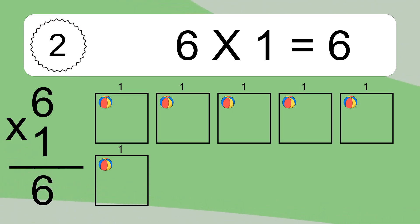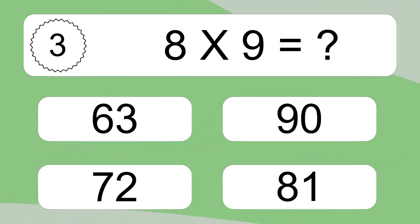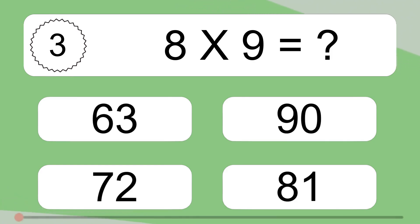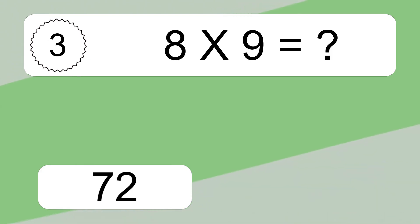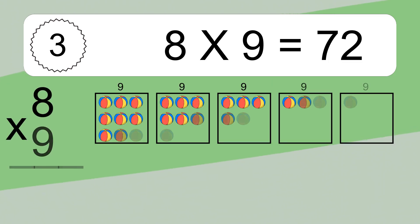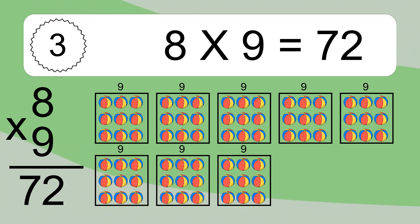This equals 6 balls. 8 times 9 equals what? We have 8 boxes, and each box has 9 colorful balls inside. If you count all the balls in all the boxes together, you will have 8 times 9 balls. This equals 72 balls.